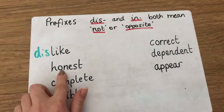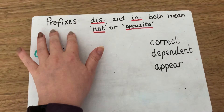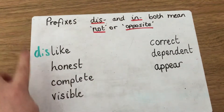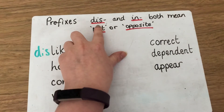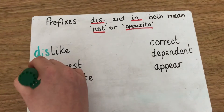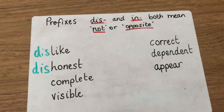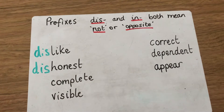The next one is 'honest'. If you describe someone as an honest person, they are trustworthy, they don't tell lies, they are reliable. So if we add our prefixes, it's 'dishonest' or 'inhonest'. 'Dishonest' sounds better. So if you are dishonest, you are not trustworthy — you tell lies, you are not reliable.